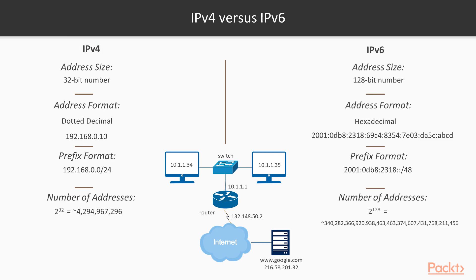We focus on version 4 in this course because we're learning subnetting. But later I'm going to give you some characteristics and advantages of version 6, one of which is not having to subnet addresses because of the many addresses that are possible with IPv6.